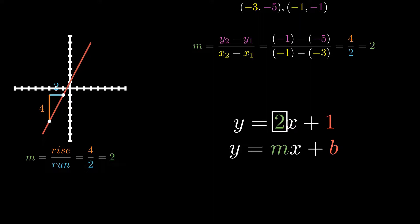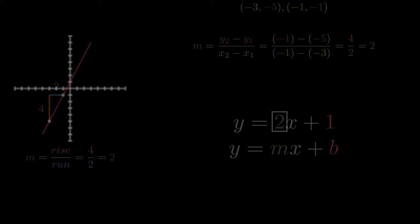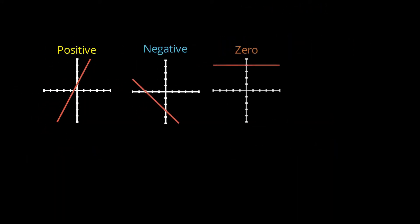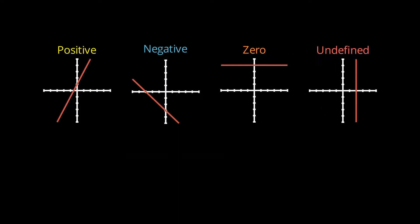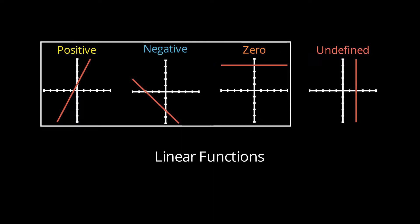When it came to slope, we learned that there are four types: positive, negative, zero, and undefined slope. Typically when we were asked to find the slope, it would be a variation of one of the four. You can notice that all of these are a variation of a straight line, and we would classify these as linear functions — with the exception of undefined, because that's not a function. When it came to finding the slope, we were really limited to these types of functions.